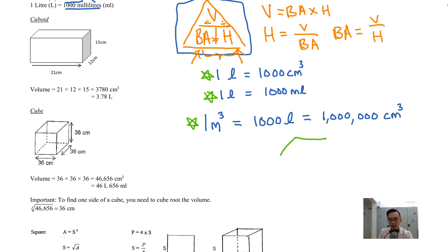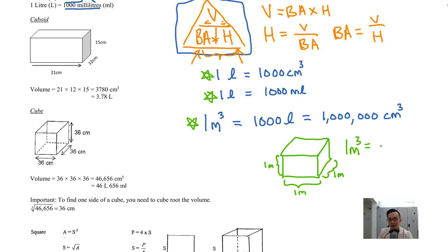So one cubic meter basically looks like this — you have a cube, and each side here is 1 meter, here is 1 meter, and here is also 1 meter. So this is 1 cubic meter, and it equals 1,000,000 cm³ or 1,000 liters. So 1,000 liters equals 1,000,000 cm³.